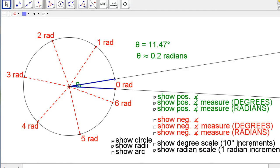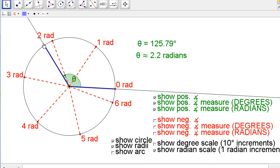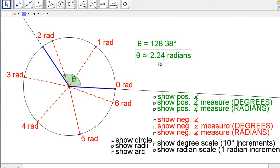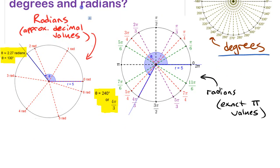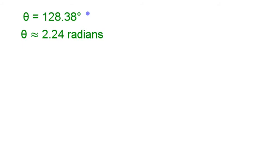Let's start by looking at and comparing an angle in degrees and an approximate value in radians. This circle is marked off in radians — one radian, two radians — not one pi or two pi, just values not involving pi. We'll pick a number somewhere there and try to convert. This angle is set to 128.38 degrees, and that's approximately 2.24 radians.